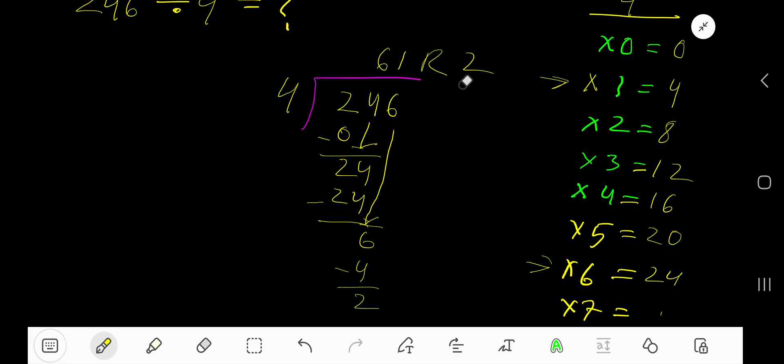If you want to write the answer in decimal form, just convert this number into a decimal. Add a decimal point and you can add any number of zeros.